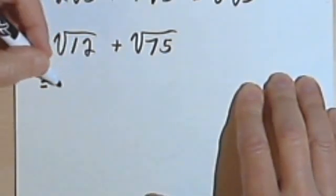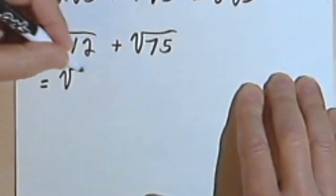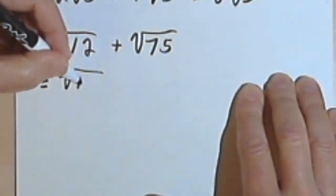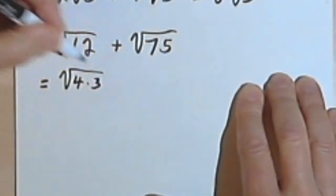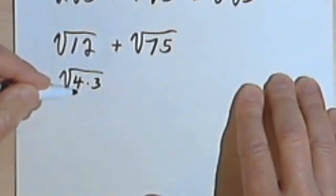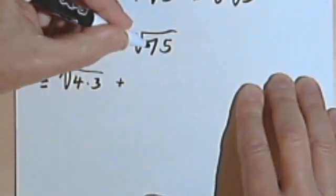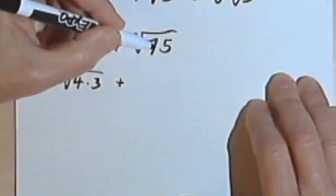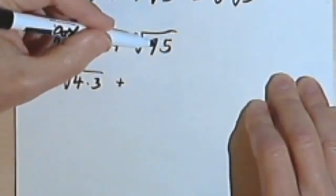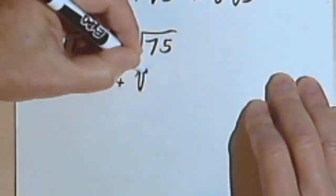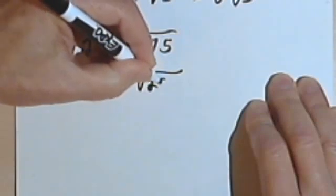So let's see. 12 is 4 times 3. So I'm going to rewrite this as the square root of 4 times 3. And 4 is a perfect square. And 75 is 25 times 3, and 25 is a perfect square. So I'll rewrite that one also.